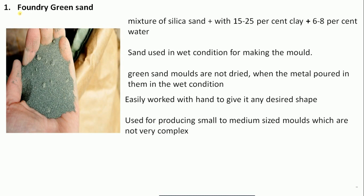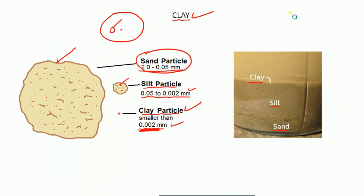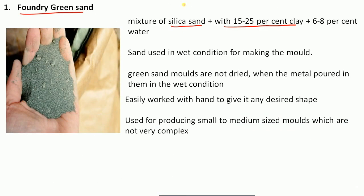Foundry sand, also called green sand, is a mixture of silica sand with 15 to 25 percent of clay and 6 to 8 percent of water. This sand is used in wet condition — this is very important — because water is already present in it.